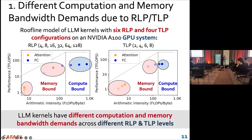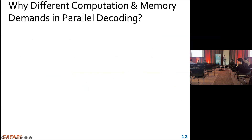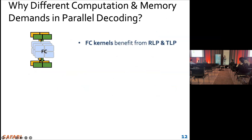Therefore, LLM kernels have different computation and memory bandwidth demands across different RLP and TLP levels. When we use parallel decoding, FC kernels can process all the tokens at the same time. Therefore, FC kernels can benefit from both RLP and TLP.